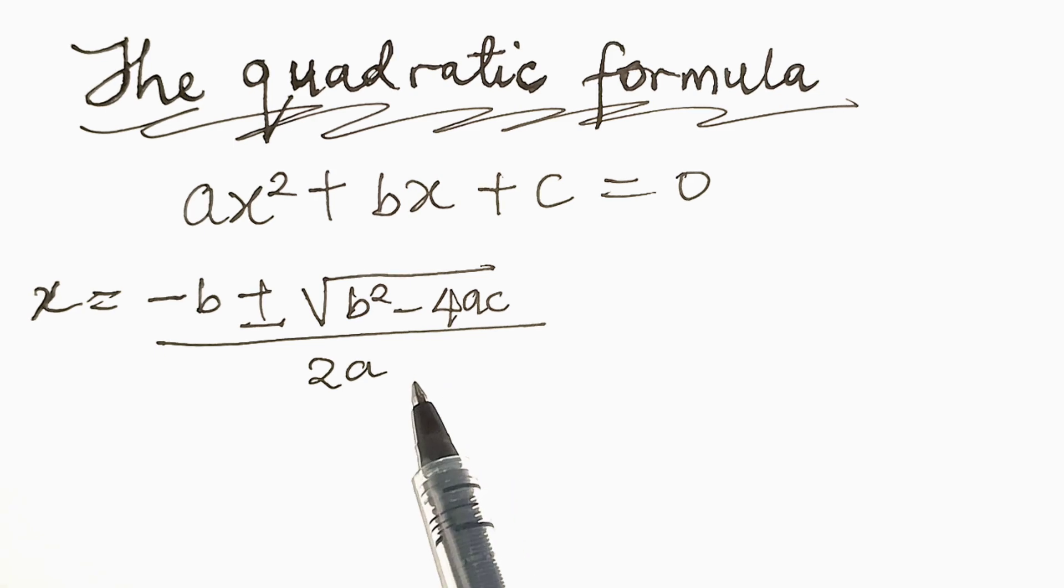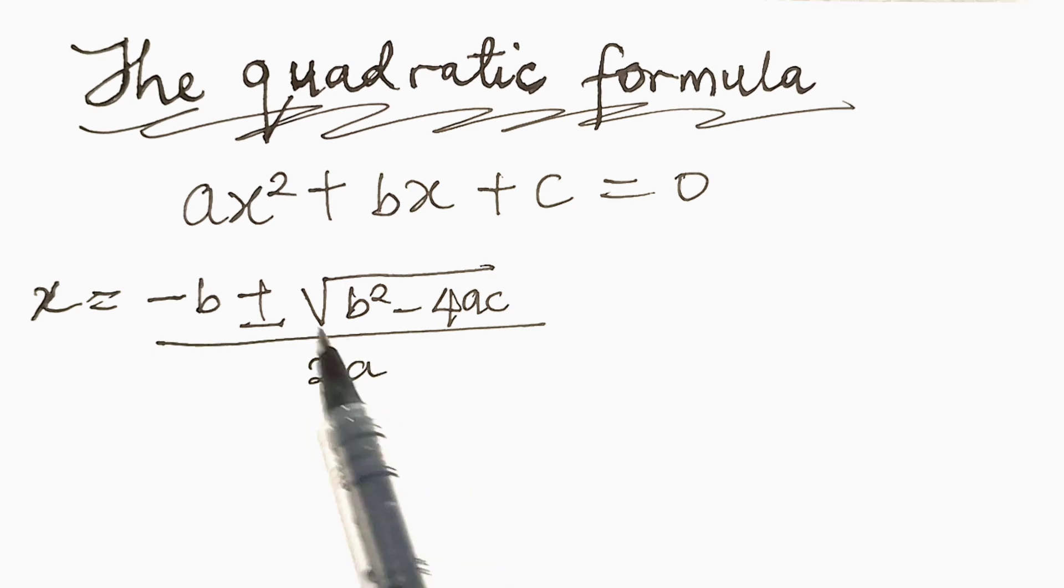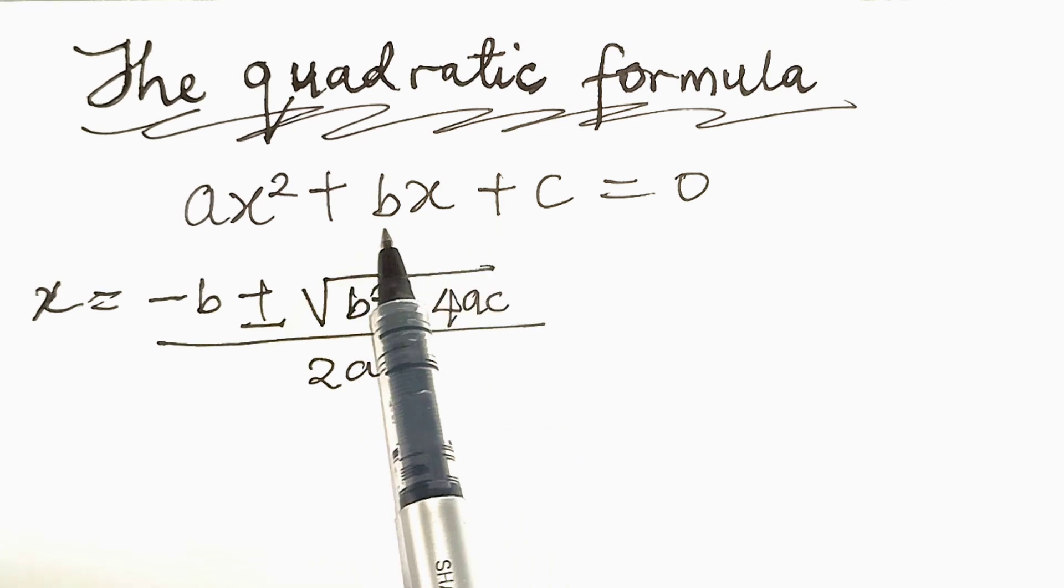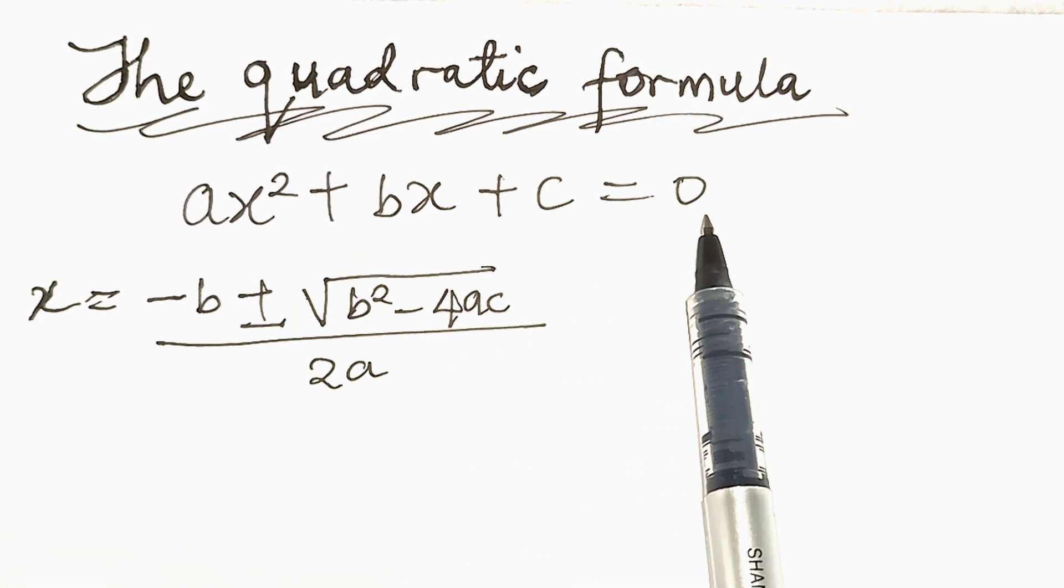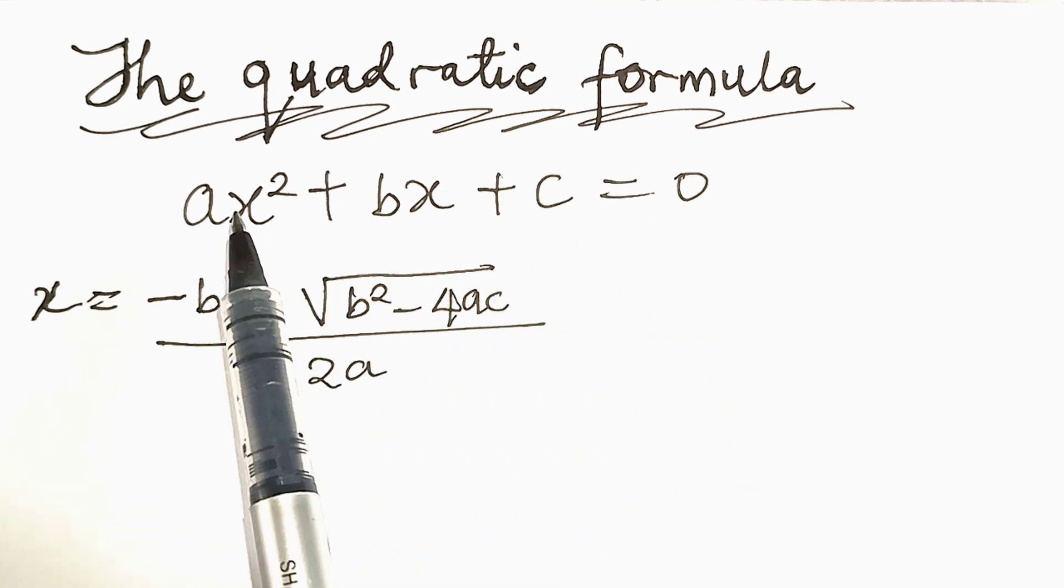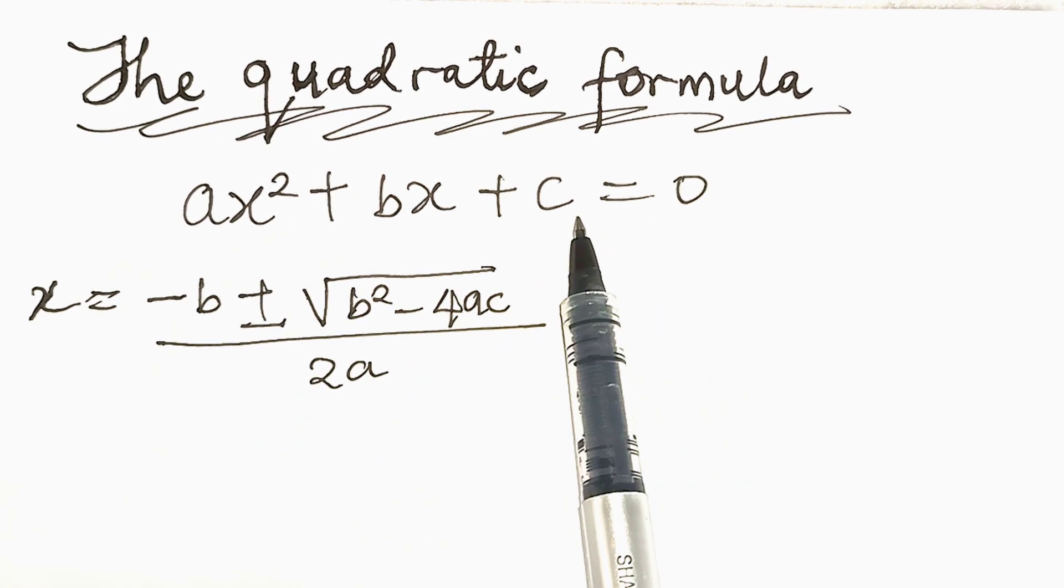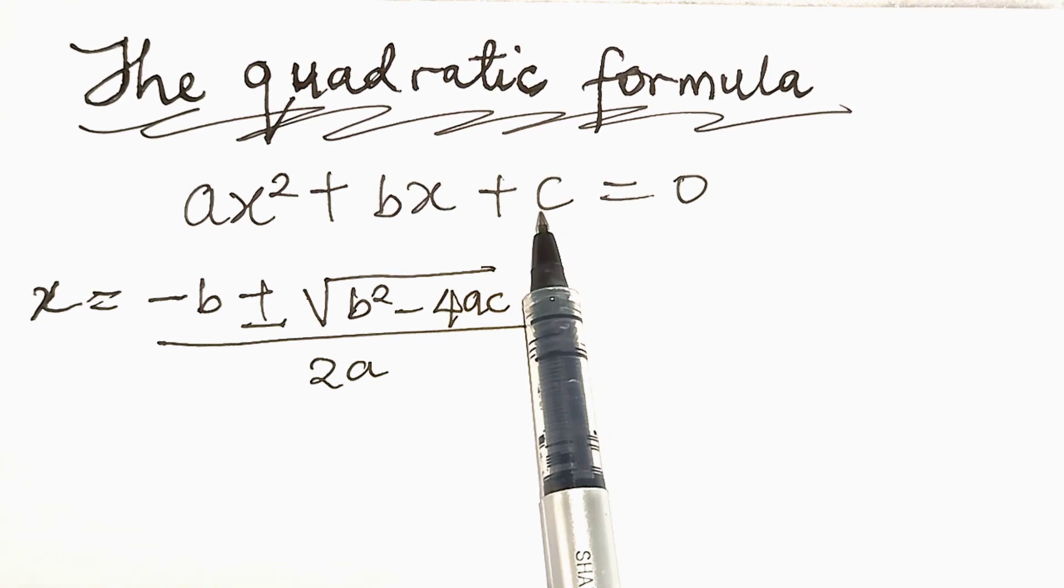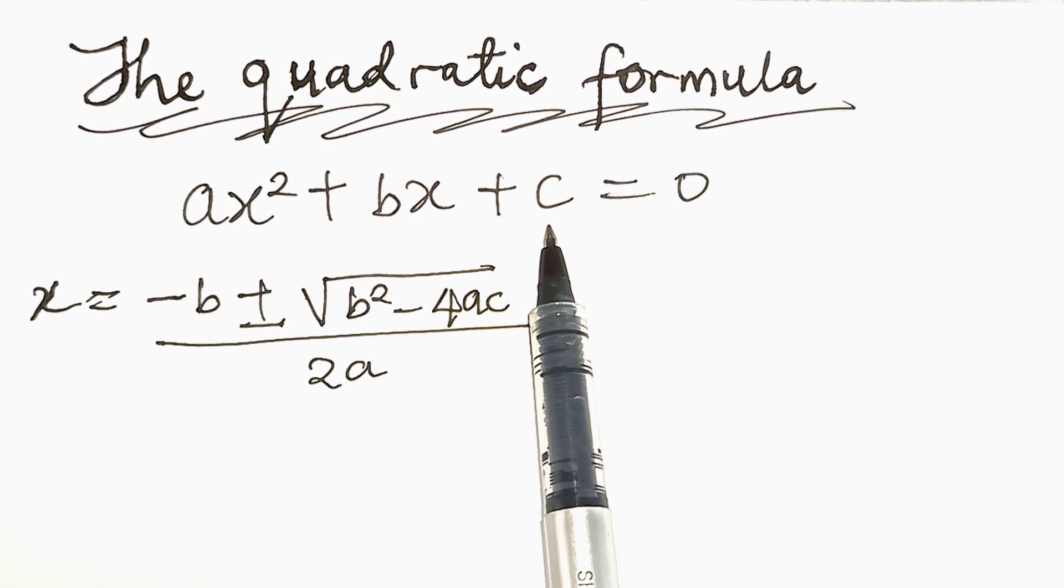When using the quadratic formula, it is very important to write the equation in the standard form, that is ax squared plus bx plus c equal to 0. The reason is that if it is written in this form, the coefficients a, b, and c can be determined accurately.